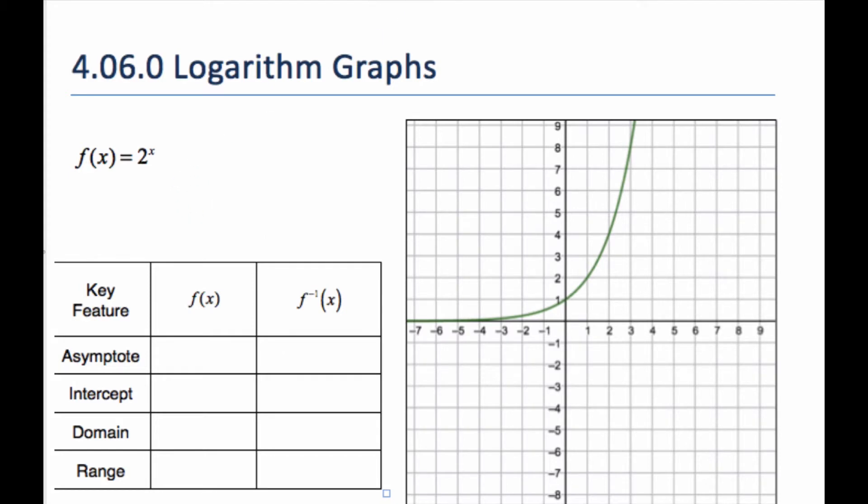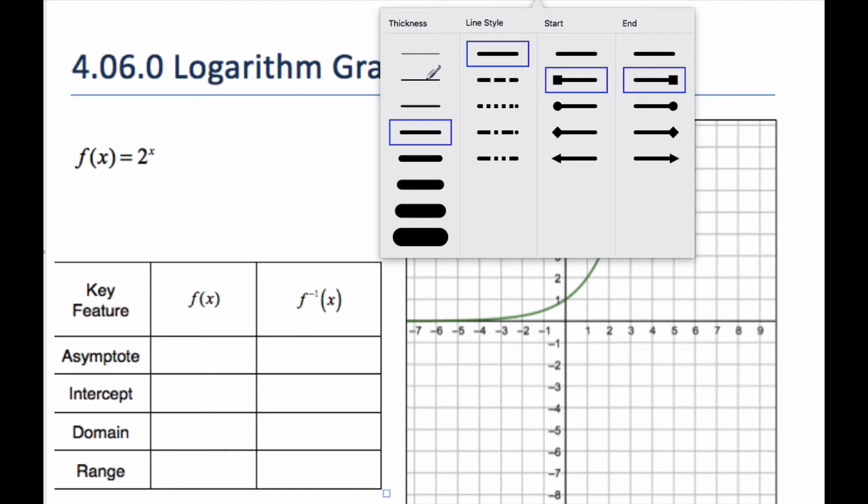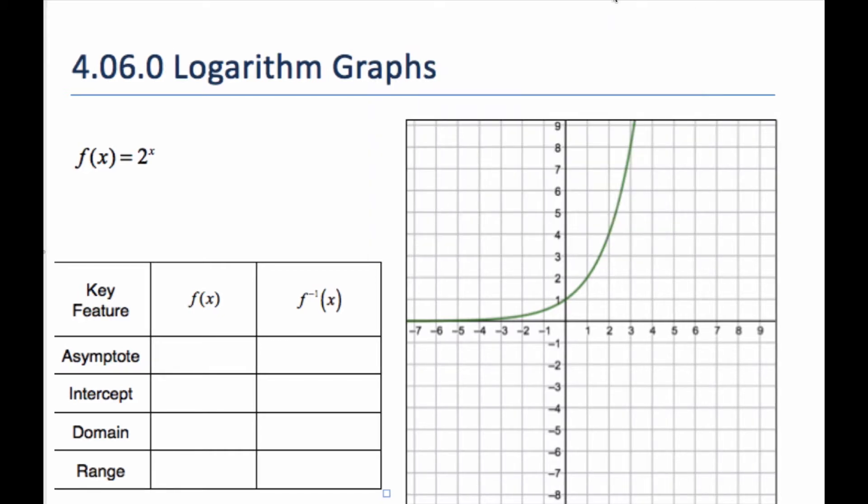I've taken the liberty to graph it here, and let's go through and talk about the key features of f(x), first of all. And so I know the asymptote, if I look at this graph, I can find my asymptote is going to be here. There's my asymptote, and that is at y = 0. The intercept of this is right here, there's a y-intercept, it is (0,1).